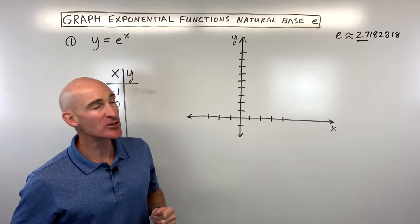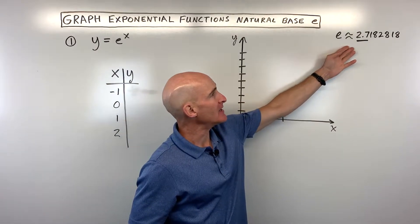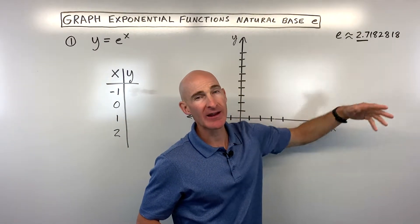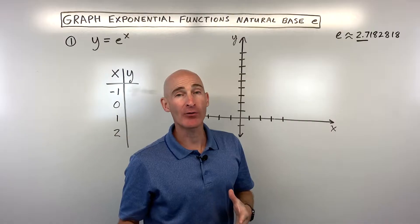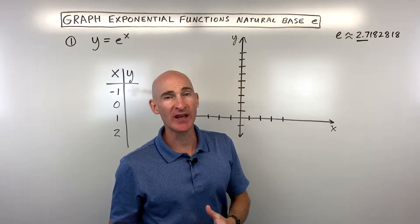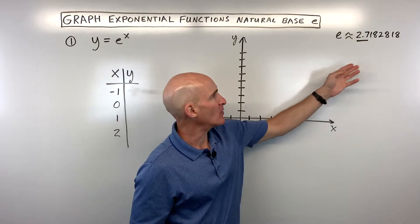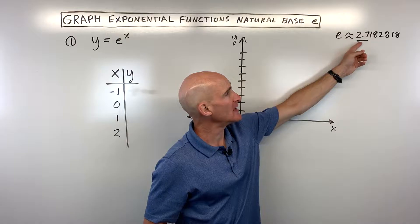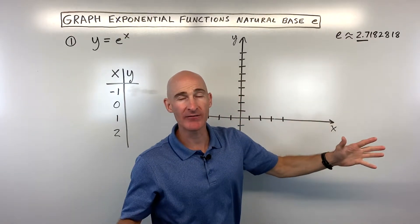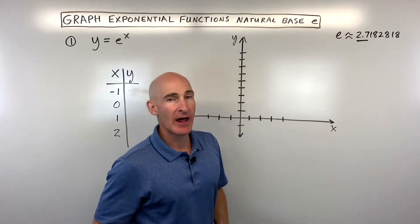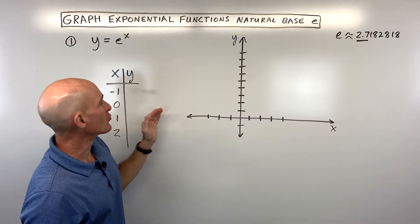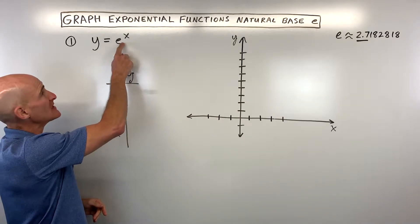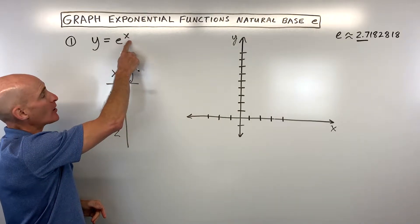First off, you want to know that e is a number like pi, where it doesn't repeat and it doesn't terminate. For all practical purposes, if we know that e is approximately 2.7, that'll help us to get a good graph. So let's start with the parent function, y equals e to the x power.